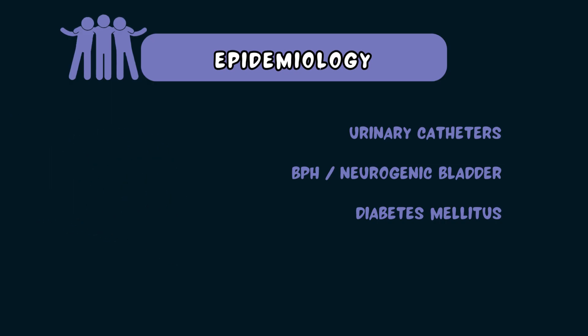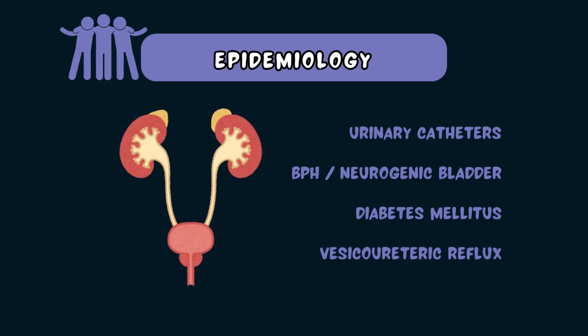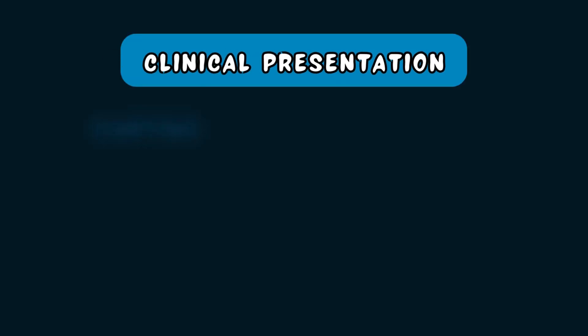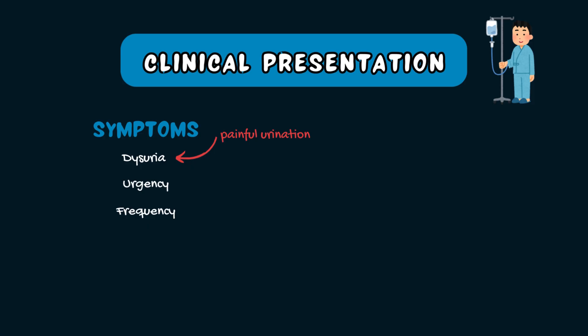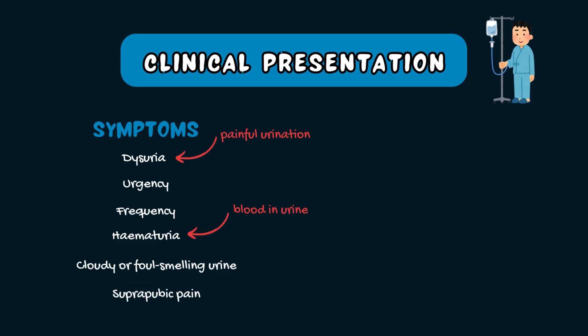Finally, anatomical abnormalities such as vesico-ureteric reflux — when urine flows backwards from the bladder up into the ureters and sometimes into the kidneys — can also predispose people to urine infections. The symptoms of a urinary tract infection include dysuria or painful urination, urinary urgency, urinary frequency, haematuria or blood in the urine, cloudy or foul-smelling urine, and suprapubic pain. Occasionally, patients may also have a low-grade fever.